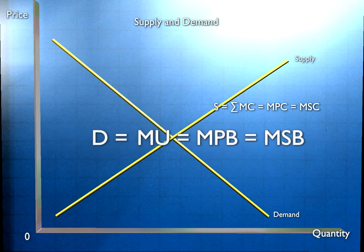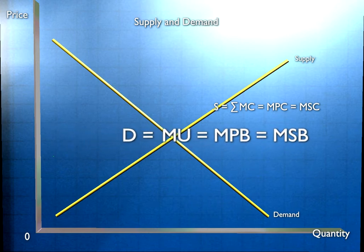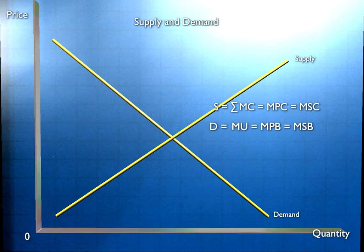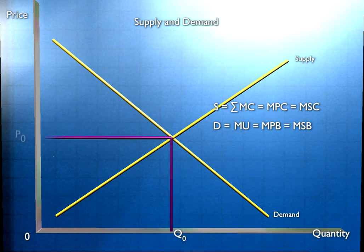So if we leave this market to the market, producers and consumers will think only of the private benefits and the private costs. That means that the level of output we'll get is Q-naught and P-naught. That's the level of output where consumers are willing to pay all that producers are willing to produce. Marginal private benefit equals marginal private cost.